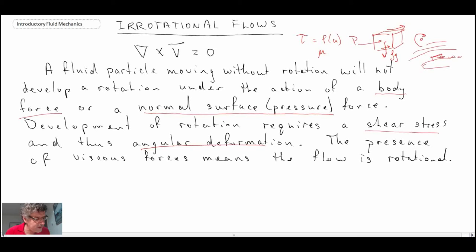So why are we interested in irrotational flow? Well, it turns out that if you can make the irrotational flow assumption, it enables you to come up with a thing called a velocity potential. And so let's take a look at the velocity potential now.